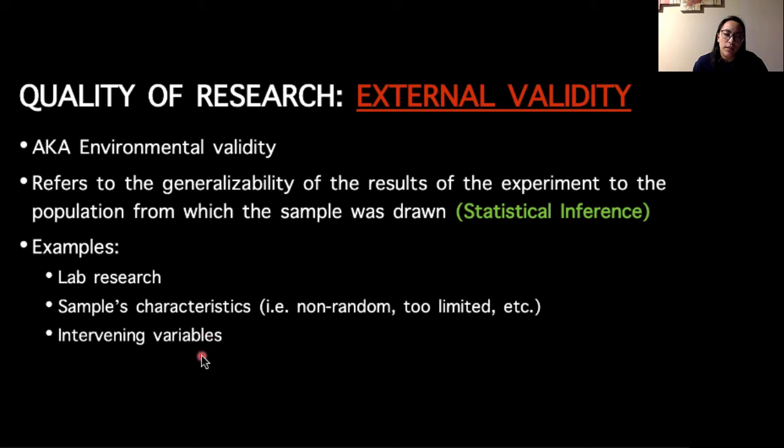Intervening variables or confounding variables can also play a role in how much external validity we have. The way that we apply intervening variables or different examples is very similar to the relationship with internal validity. So it's like lab research, right? The more that we control for confounding variables, the more that we know the results of our study are due to the experiment, but also we know that if we treated a sample in this way and we've eliminated confounding variables that are not present in the population, then our results are generalizable from sample to population.